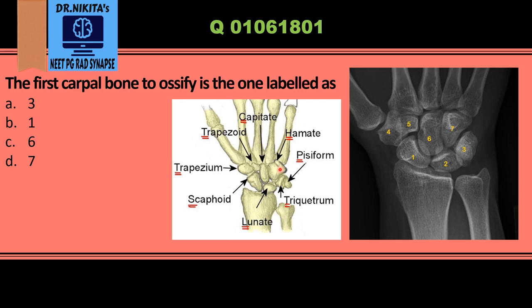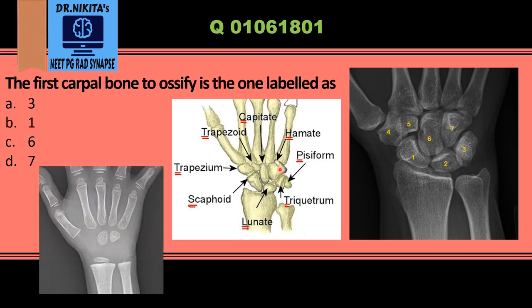If the question asks how many carpal bones are seen in the radiograph of an infant, the answer is two — capitate and hamate. To remember the sequence of ossification: the first carpal bone to ossify is capitate, and the last is pisiform.